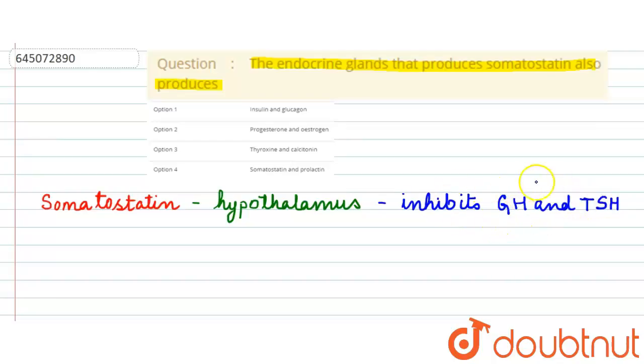Now, in addition to the hypothalamus, a little bit amount of somatostatin is also produced in the pancreas. And the pancreas is actually a heterocrine gland, that means it is an endocrine gland as well as an exocrine gland. Now it secretes insulin and glucagon, and both of these hormones are very important in order to control the sugar level of the body.